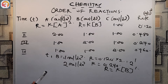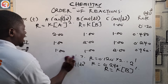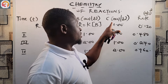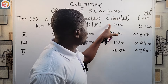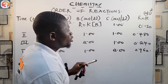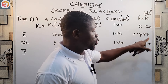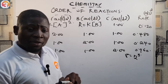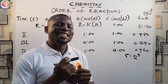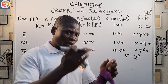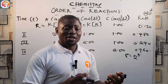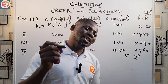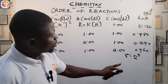When the concentration of B increased by a factor of 2, the rate also increased by a factor of 2. So we write R = k[B]¹ — the reaction is first order with respect to B. Now let's go to C: when the concentration of C was 1.00 mol/dm³, the rate was 0.120, but when the concentration of C changed to 2.00 mol/dm³, the rate was 0.960.